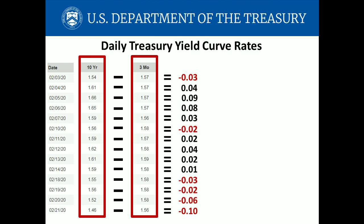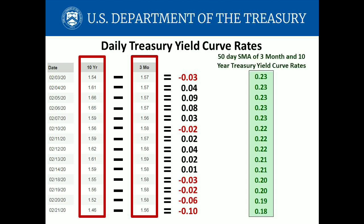The yield curve is starting to invert again in February 2020, and yet not many people are paying attention to this. The probability of both a stock market major correction and a following recession is close at hand. One final and important point: when the 50-day simple moving average of the 3-month and 10-year Treasury yield curve data is used to determine inversions, there has never been a false recession indicator in the past 50 years. Every single recession has been preceded by this inversion without a single false indication.